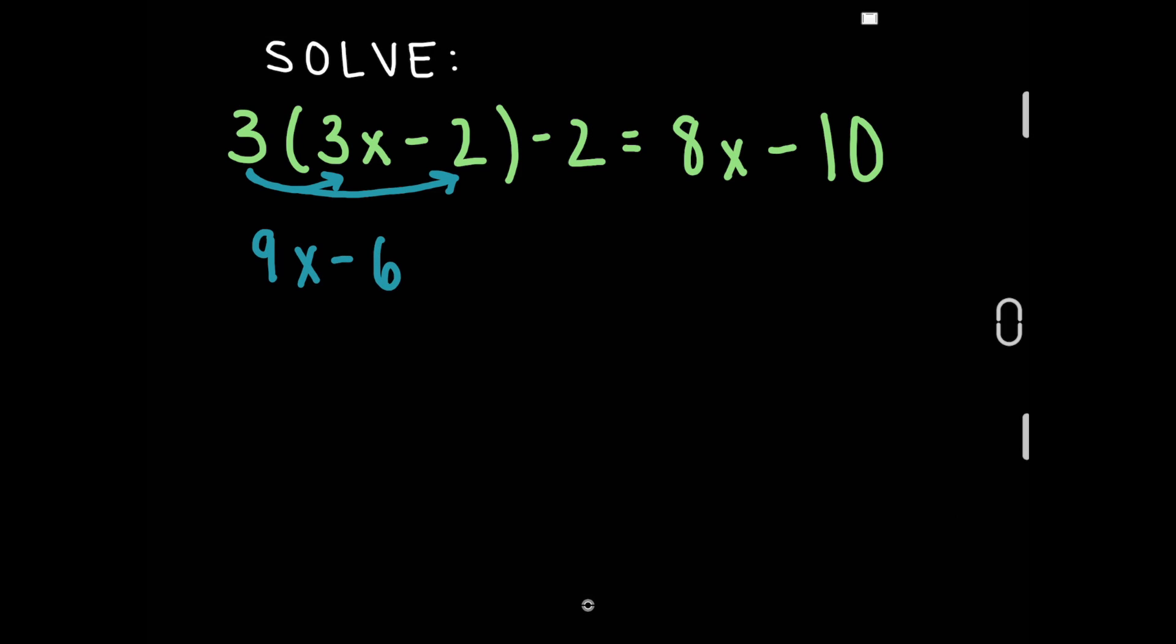Now our equation is 9x minus 6 minus 2 equals 8x minus 10. Simplify this equation more by subtracting negative 2 from negative 6. Negative 2 minus 2 is just negative 8.